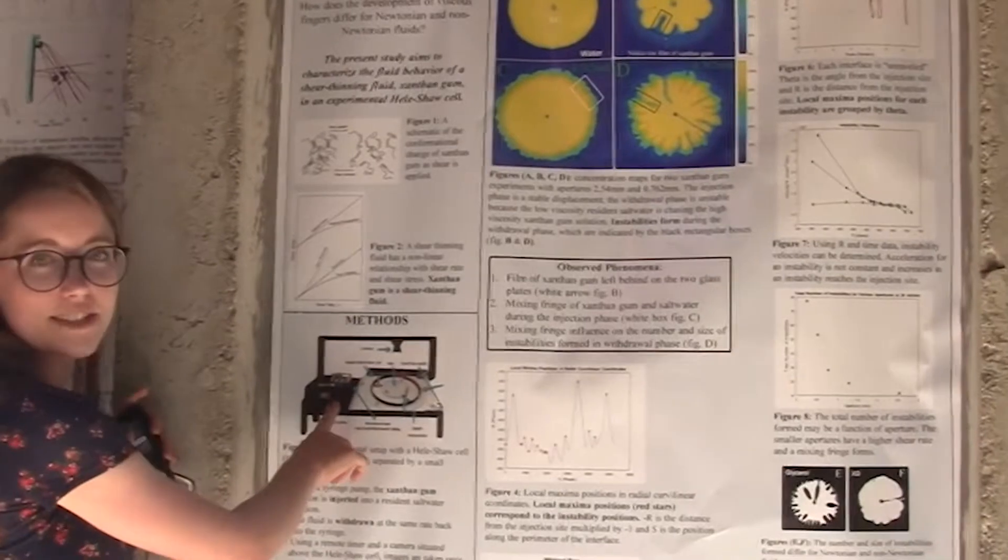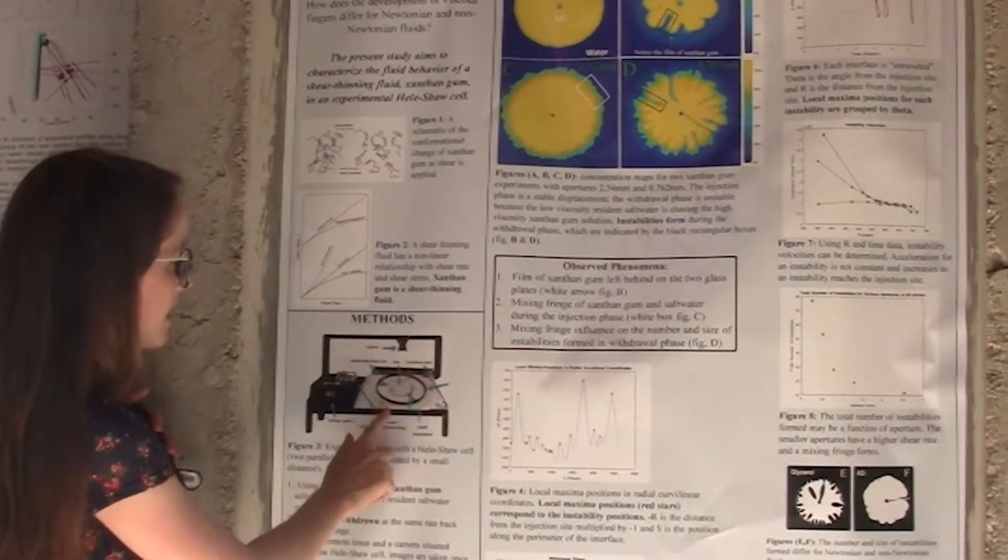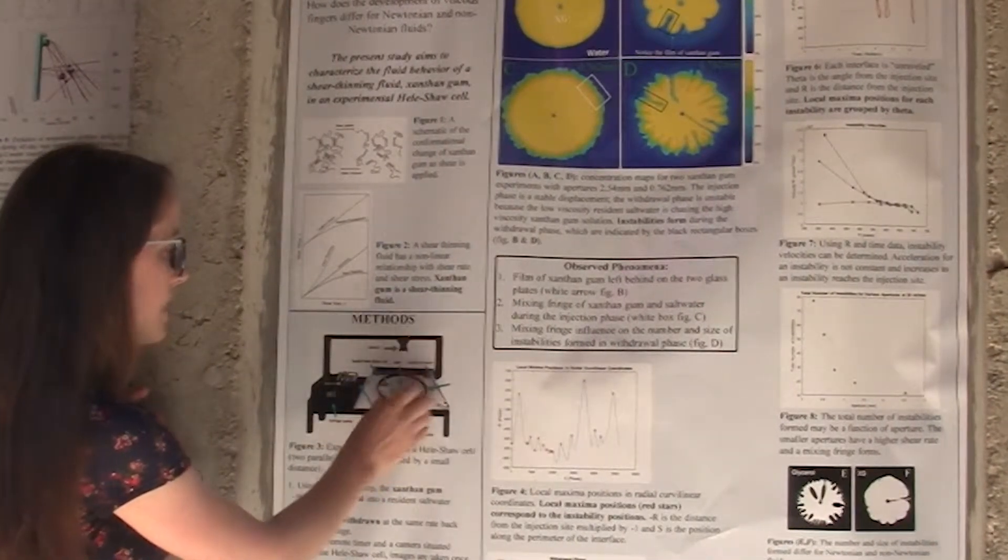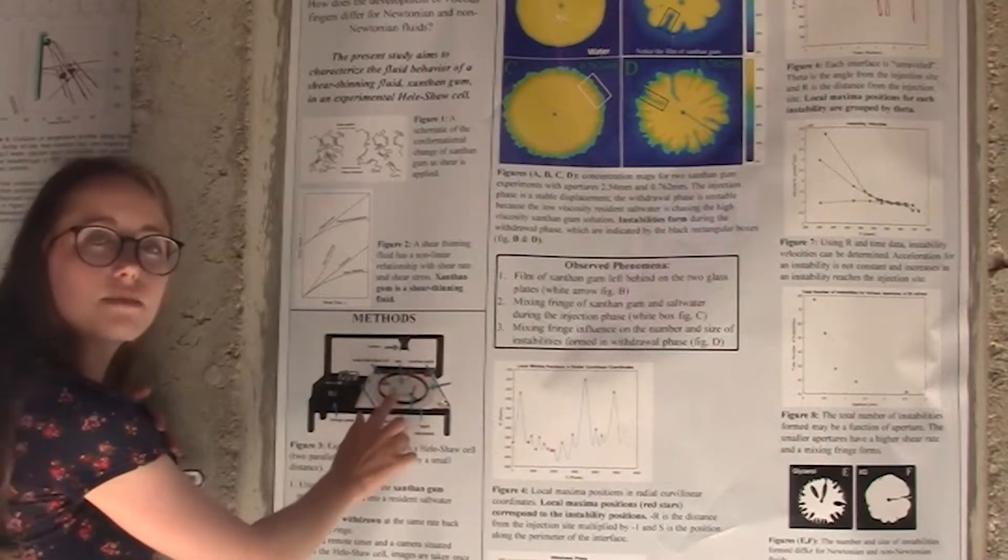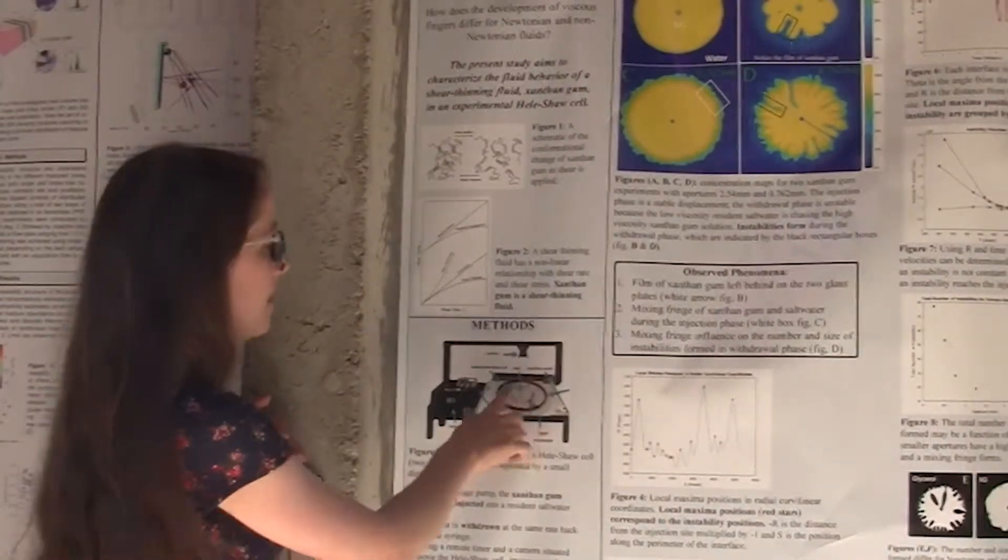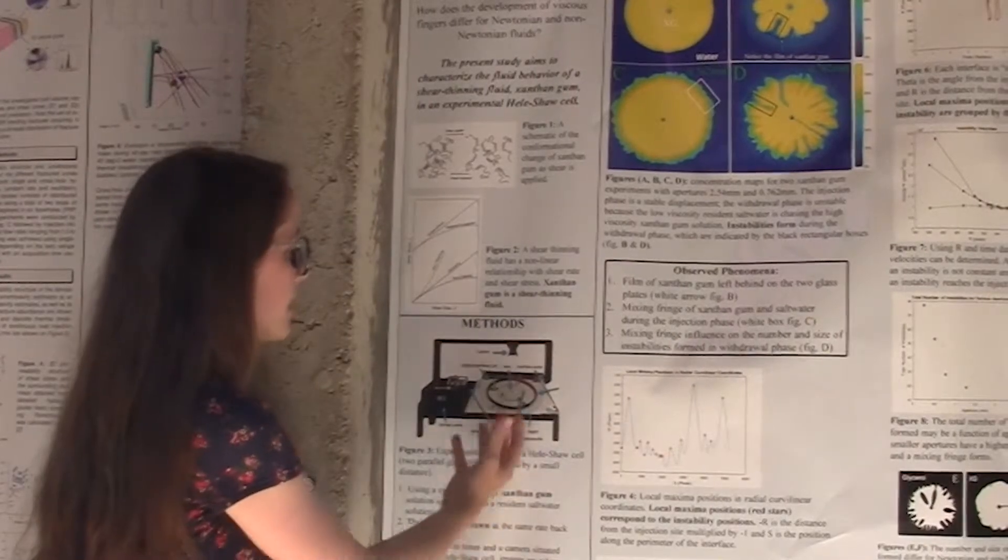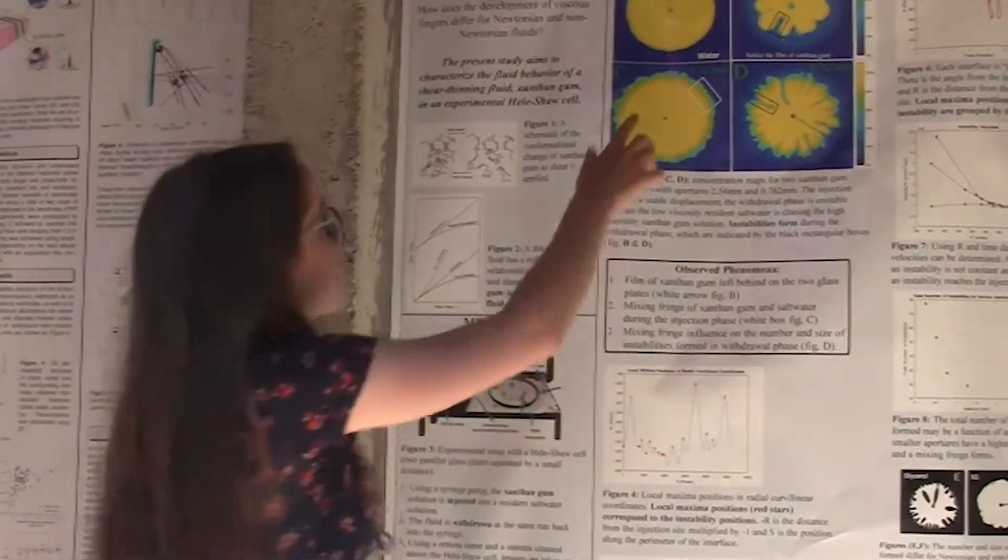Over here, you have the syringe pump here, and we're injecting the xanthan gum through this hole here. In between the cells, we have a salt water solution that is just the resident solution. So we're injecting fluid in, and it advances radially.